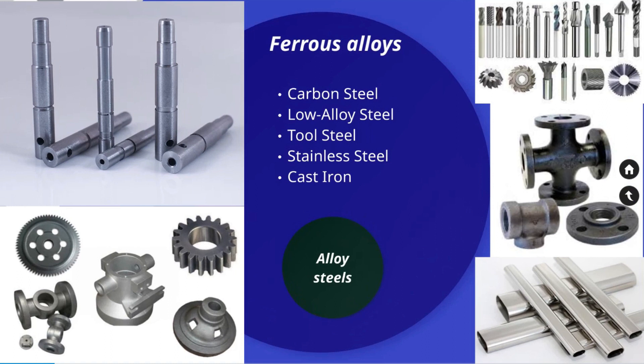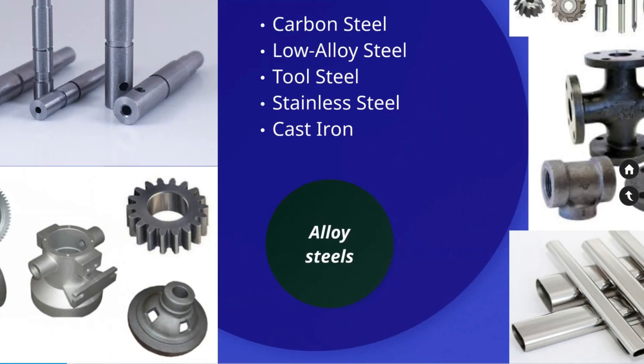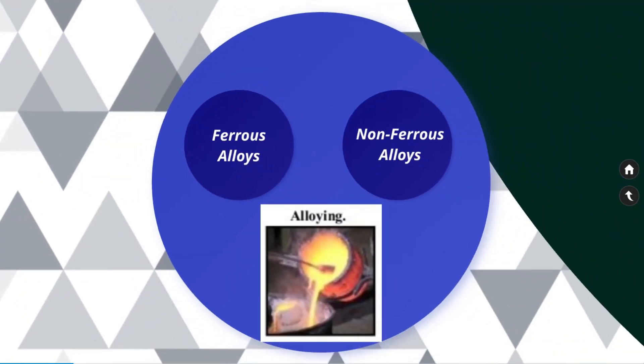Carbon is an important alloying element in all ferrous alloys. In general, a high level of carbon increases strength and hardness but decreases ductility and weldability. Examples of ferrous alloys are carbon steel, low alloy steel, tool steel, stainless steel, and cast iron. Alloy steels are also made in multiple forms such as chromium, nickel, molybdenum, vanadium, and manganese. The use of material varies based on the application.